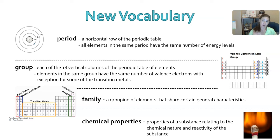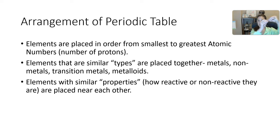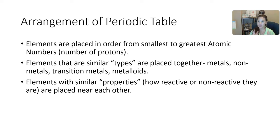Remember that the arrangement of the periodic table is very particular. Elements are placed in order from smallest to greatest atomic number — smallest at the top left, increasing as you go right and down. Elements of similar types are placed together: metals with metals, non-metals with non-metals, and you also have transition metals and metalloids.